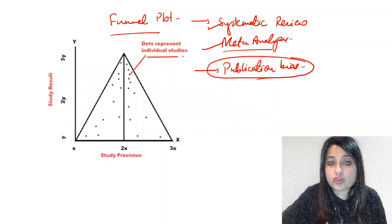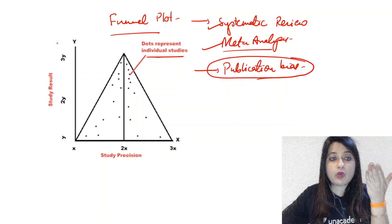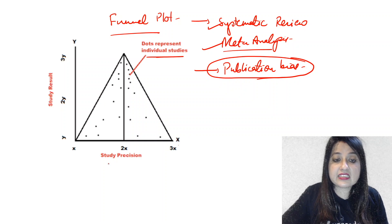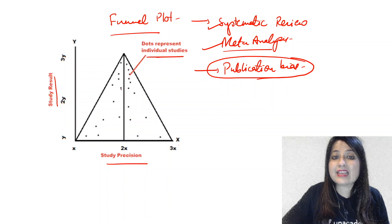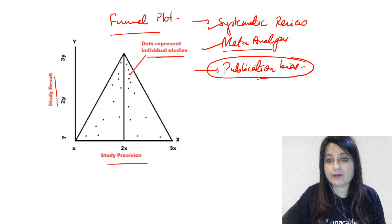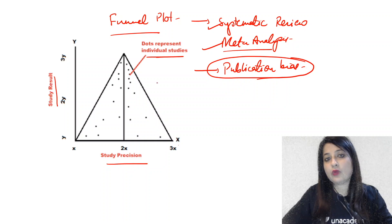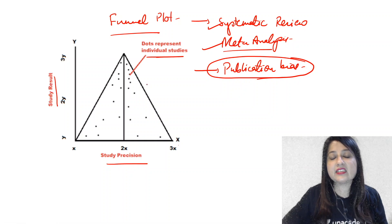If the dots, these dots someday they can give you what is y-axis, what is x-axis. So x is the study precision, y is the study result. And if the dots are scattered, that means no publication bias. But if the dots are clustered at one end, that means publication bias is present.